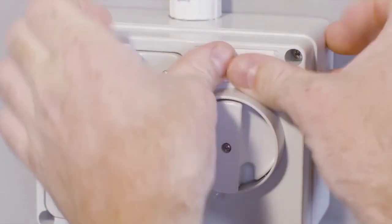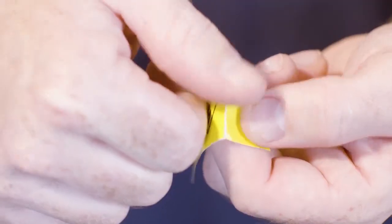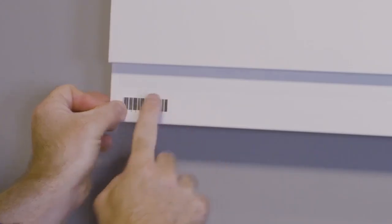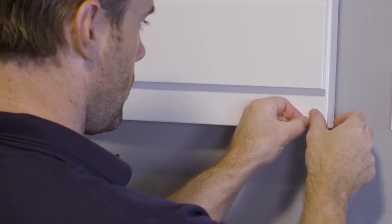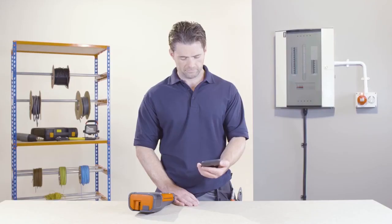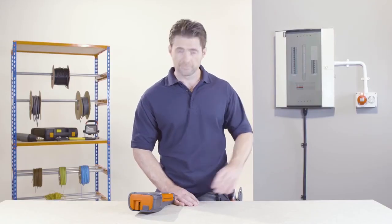You're now ready to start printing labels wirelessly from your mobile device. TZ e-tapes are tested to the extreme and are available in a range of widths, colours and materials including laminate, strong adhesive, flexible ID and heat shrink tube.